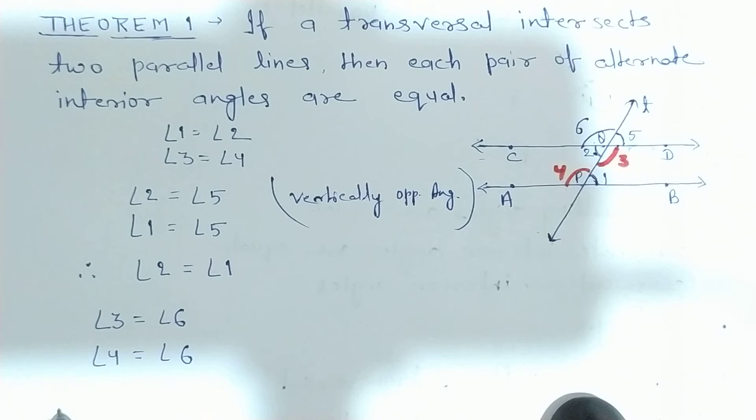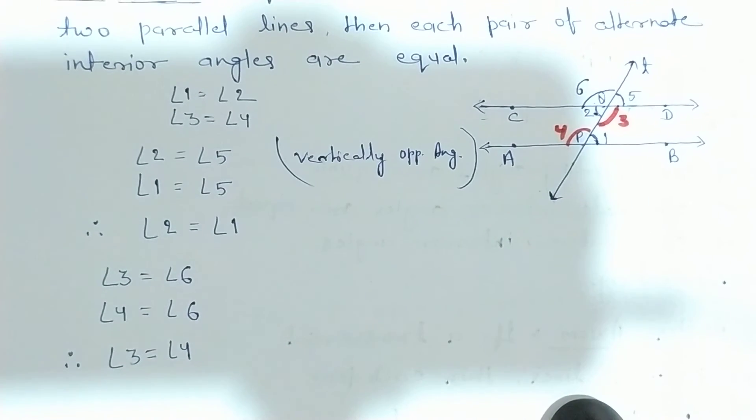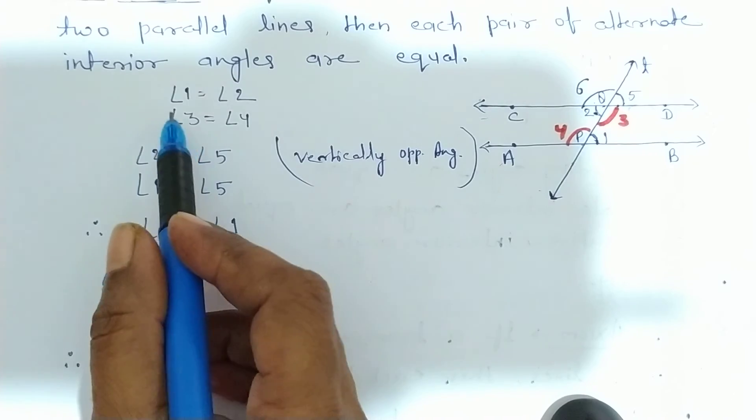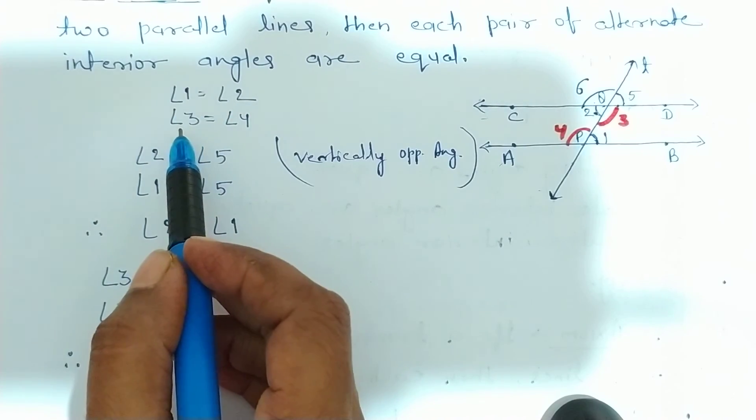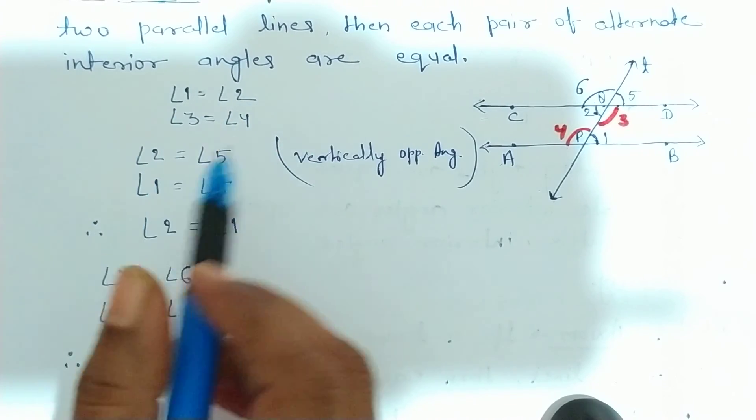To, now, therefore, angle 3 equal to angle 4. Clear hai? To, humein yeh hi proof karna tha. Now, prove that angle 1 equal to 2 and angle 3 equal to 4.